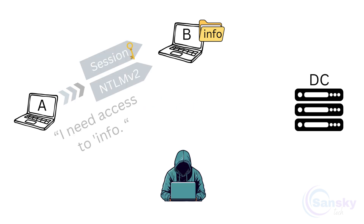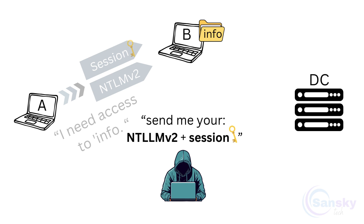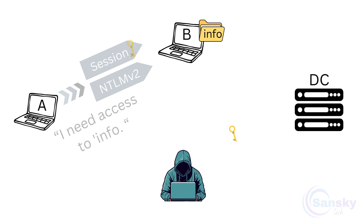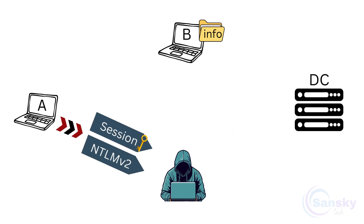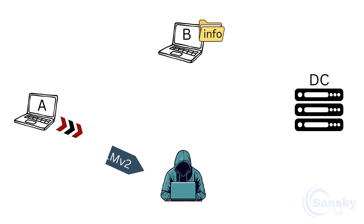As before, A intends to send its NTLMV2 hash and session key to B. But in this scenario, the attacker pretends to be system B and contacts system A, asking for A's NTLMV2 hash and the session key. A, convinced that the request is legitimate and coming from system B, sends its NTLMV2 hash and session key to the attacker, granting the attacker control over its credentials and encrypted session.